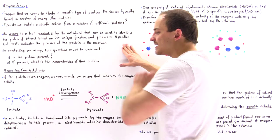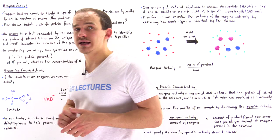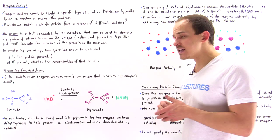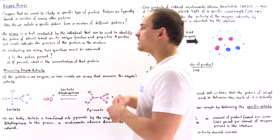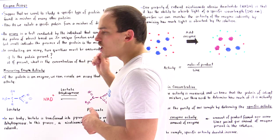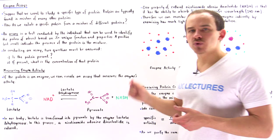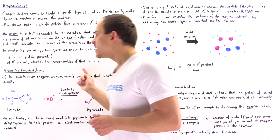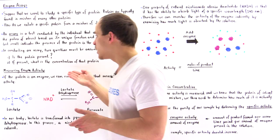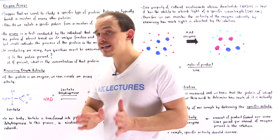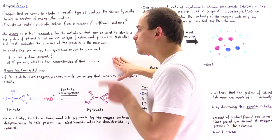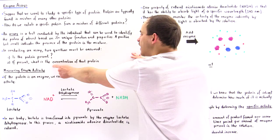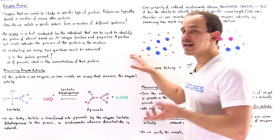If we obtain a positive test result from our assay, then that protein of interest is present in that sample. If we get a negative result, that means the protein is not present and we have to go get a new sample that does contain it. Whenever we conduct an assay, there are two questions we ask: first, is the protein present in our sample? We answer this by measuring the protein activity — or if we're dealing with an enzyme, which is usually the case, we measure the enzyme activity. The second question is: what is the concentration of that protein in our sample?